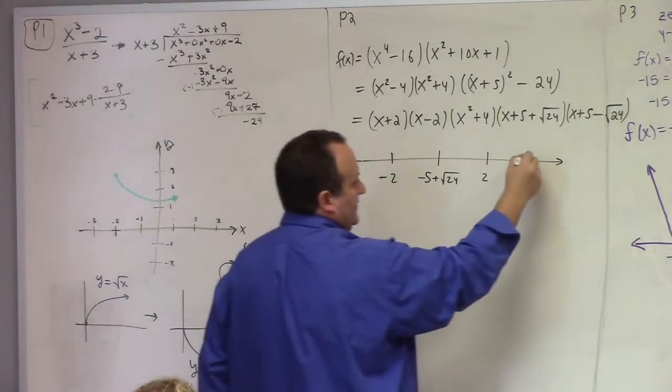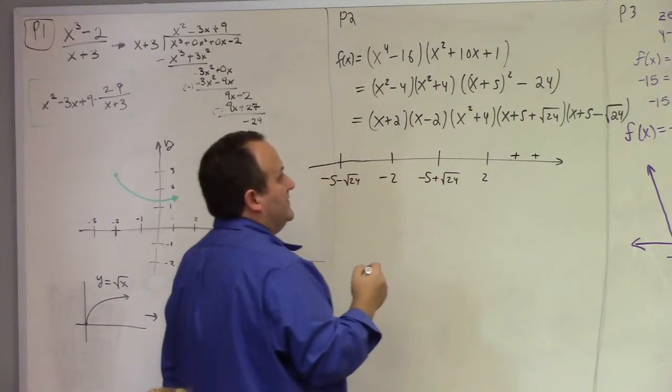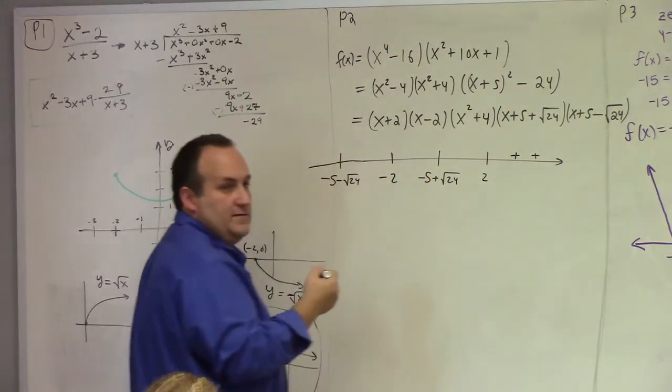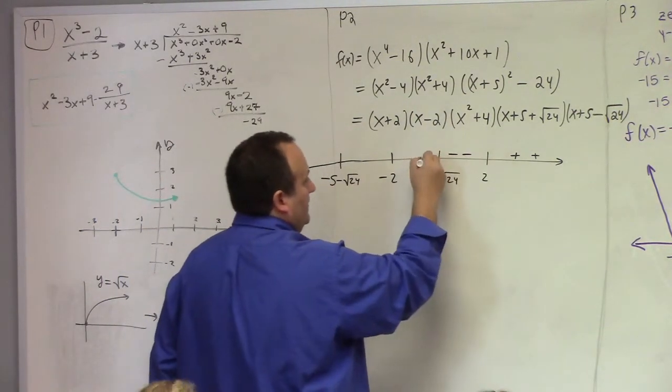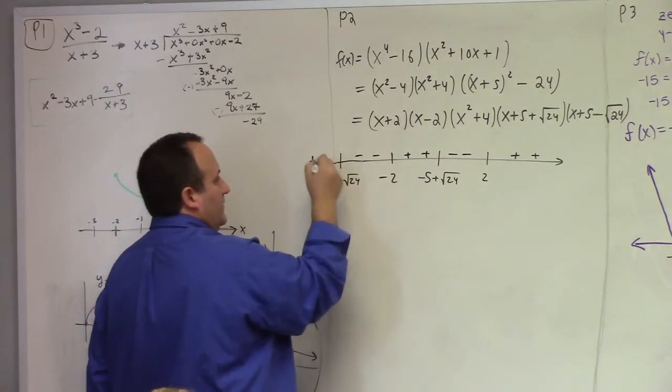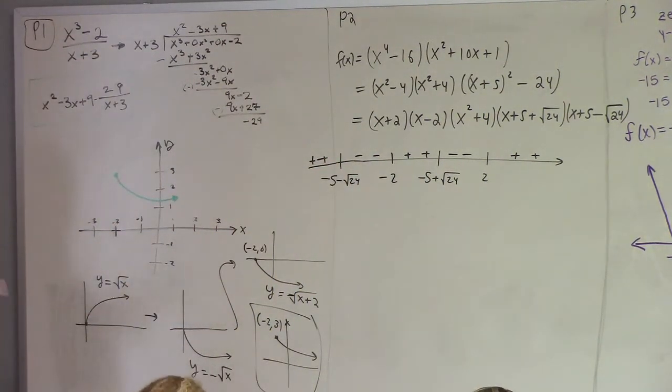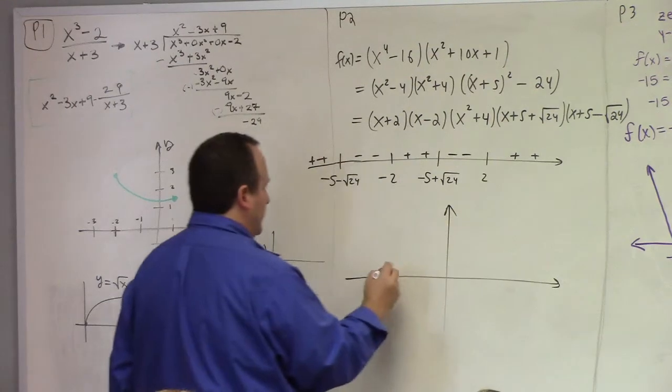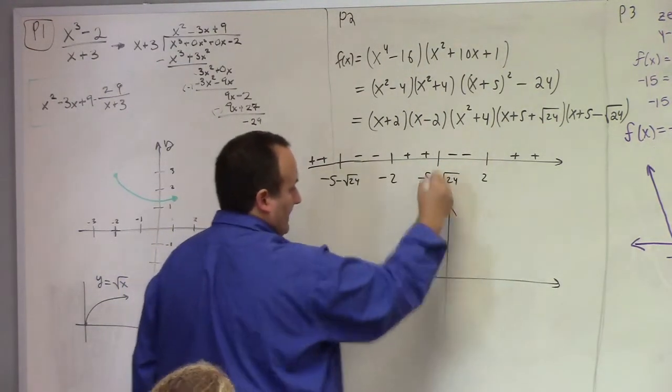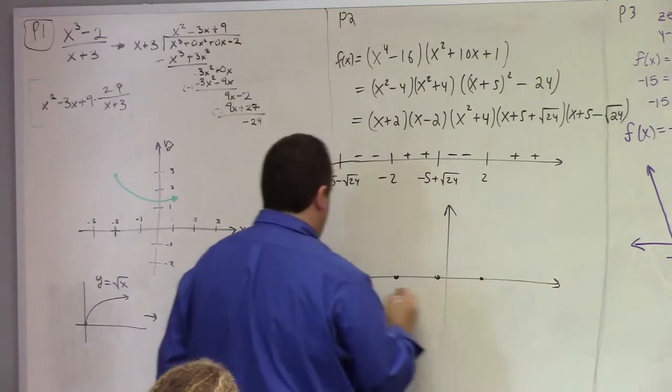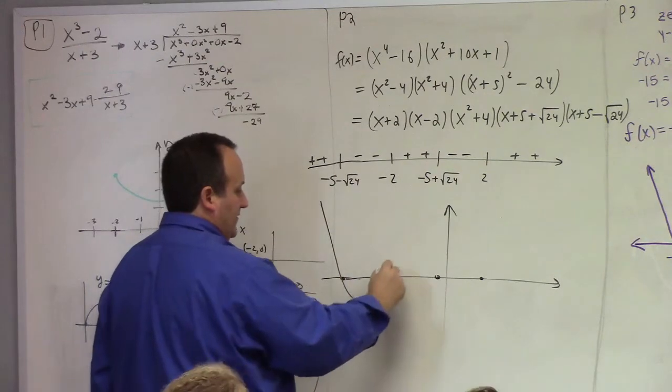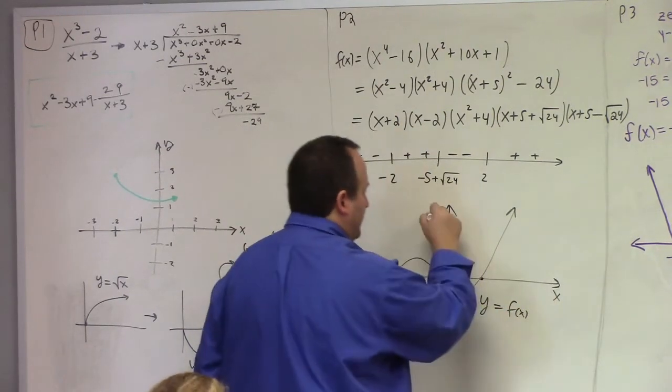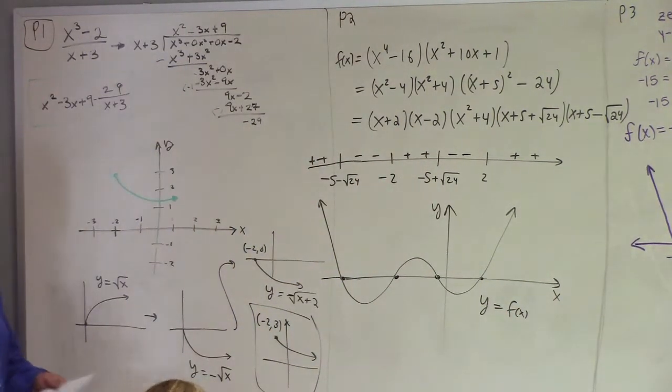X squared plus 4 is a prime factor. That is only 0 for plus or minus 2i. So it doesn't contribute anything to the sign chart here. They're all odd power, they're all just power 1's that flips every time. And then the graph looks something like this. It's positive on the ends, it's got to turn around, it's got to cross, it's got to turn, it's got to cross. So it looks something like that. We could be more careful, I have been more careful in lecture before.